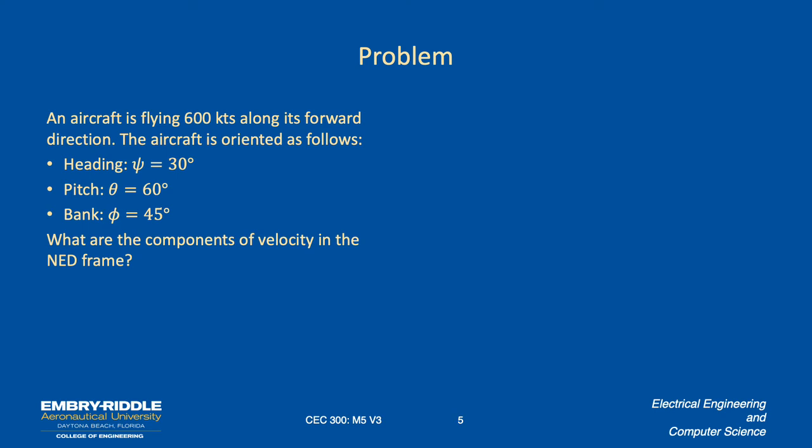So here's a problem. Aircraft is flying 600 knots along its forward direction, and it's oriented 30 degrees off from north. It's pitched up at 60 degrees, and it's banking at 45 degrees. Banking so the right wing is lower than the left wing, assuming it's a winged aircraft. So what are the components of the velocity in the northeast down frame? So our approach is going to be to figure out the transformation of the coordinate system and then just multiply the vector, which is the velocity vector of the aircraft, which would be 600 forward, zero right, zero down.